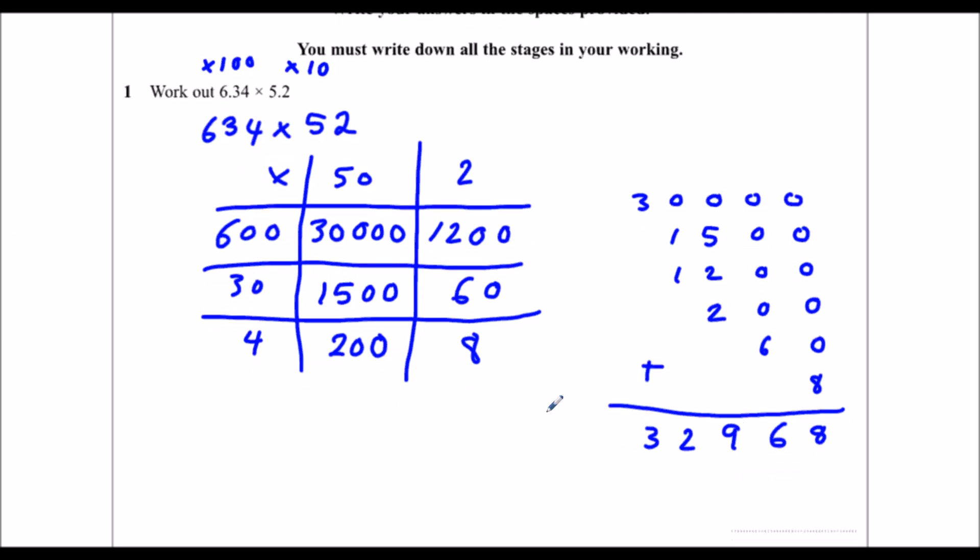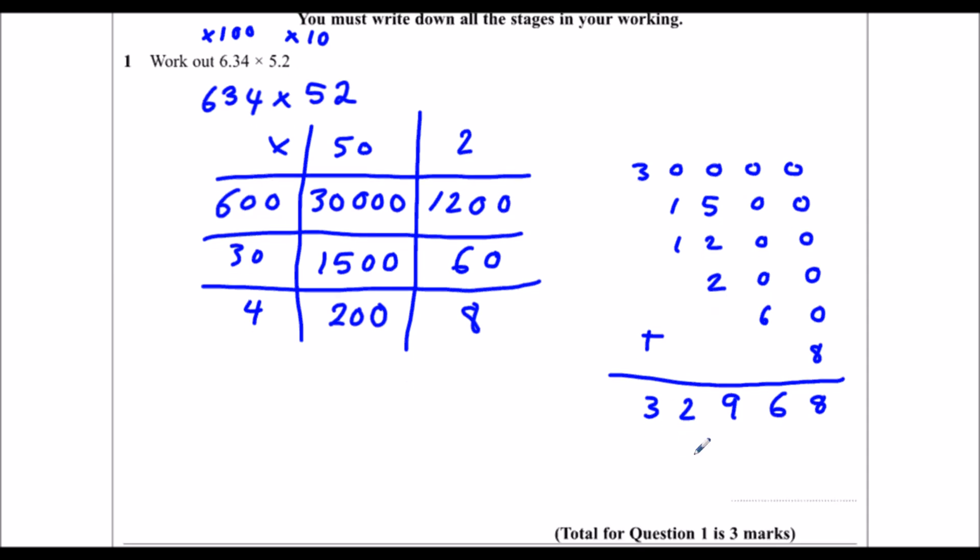And I need to put the decimals back in. I timesed by 100 and I timesed by 10, so I need to undo that. I need to divide by 100 and divide by 10 for the answer. So I'm going to get 32.968.